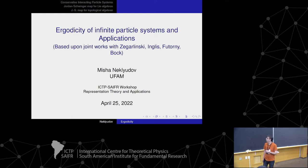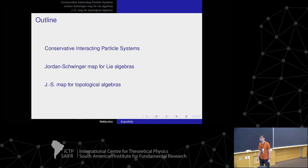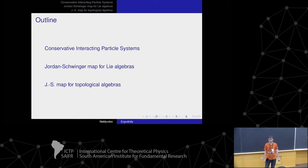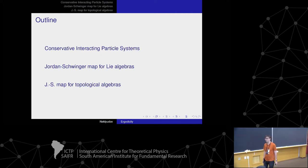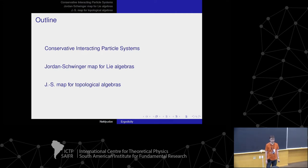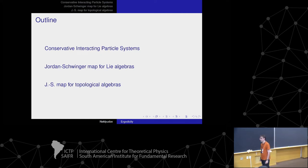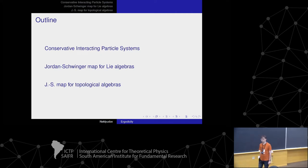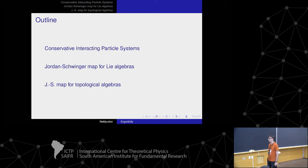The plan is as follows. First I will briefly discuss the interacting particle system and explain how the algebraic construction arises there. This construction is actually some kind of extension of the classical Jordan-Schwinger map. I will discuss applications of the Jordan-Schwinger map for Lie algebras, and afterwards I will talk about an analogous construction — the algebraic Jordan-Schwinger map for topological algebras. In the end I will present certain open directions of research.